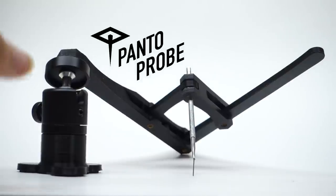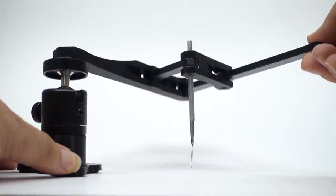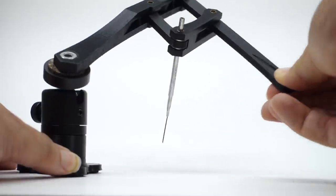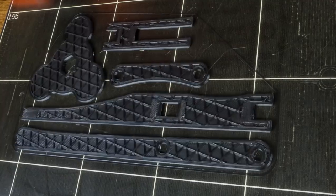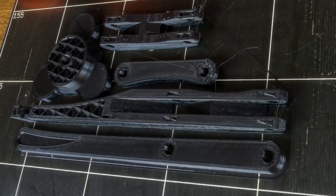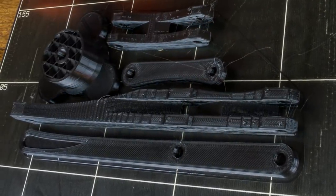The Pantoprobe is a simple mechanism that amplifies your precision, letting you troubleshoot small electronic components. The design is open source and based on these 3D printed parts.